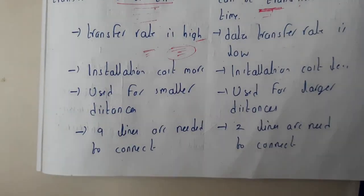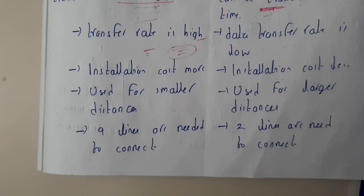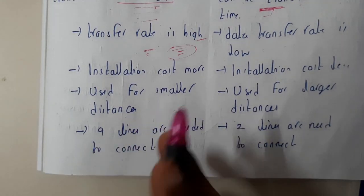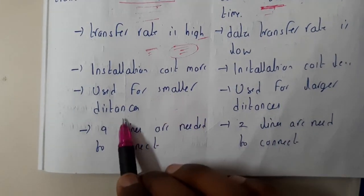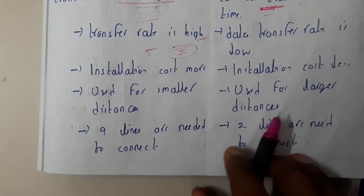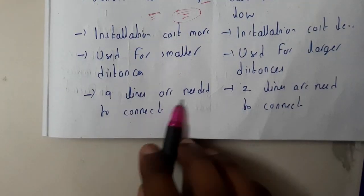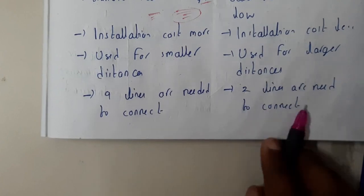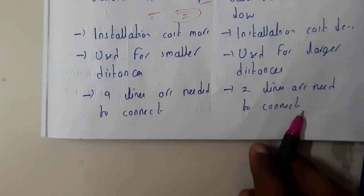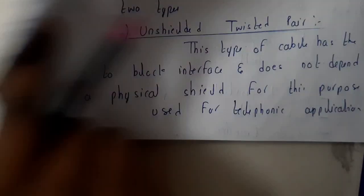Parallel communication is used for small distances because only for shorter distances can we afford more number of lines. If it is for hundreds of kilometers, establishing eight cables would be really costly. That is the reason why parallel communication is used for smaller distances and serial communication is used for larger distances. Basically, parallel communication needs nine lines connected, while serial communication uses only two lines.